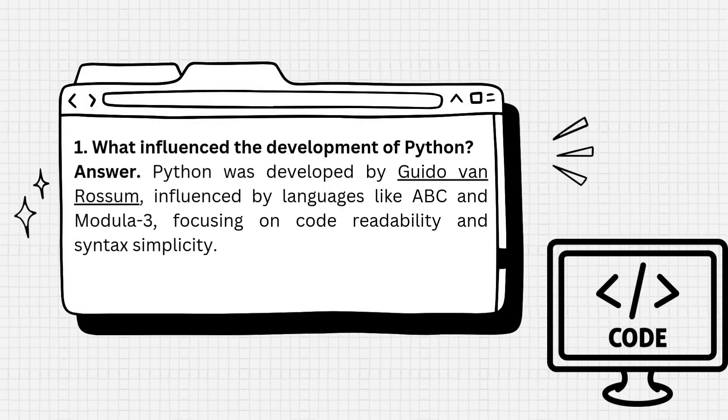Question 1: What influenced the development of Python? Answer: Python was developed by Guido van Rossum, influenced by languages like ABC and Modula-3, focusing on code readability and syntax simplicity.